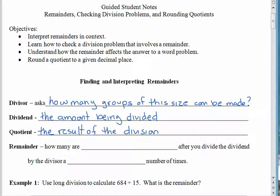And of course the quotient is the result of the division. Many times the quotient is a decimal, but if we leave the quotient as a whole number, then we can often have a remainder. So the remainder talks about how many things are left over after you divide the dividend by the divisor a whole number of times.